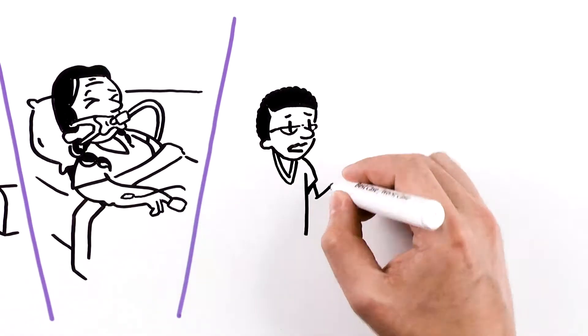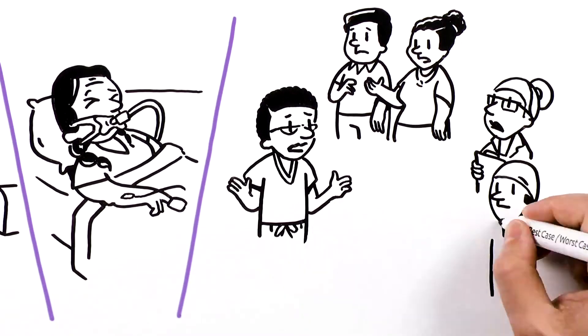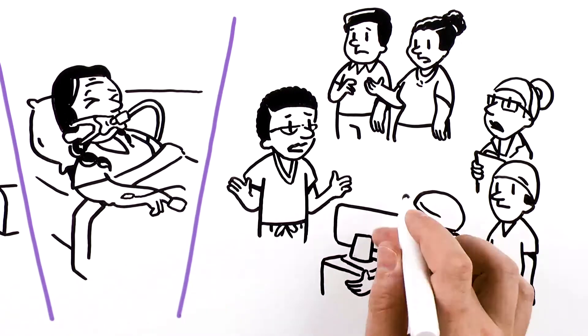Now your team is rounding. How can we make sure that everyone, including the family, other team members, and consultants, are on the same page?